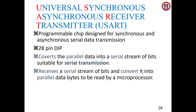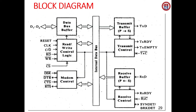This is the block diagram for the USART. It has five sections: the data bus buffer, read/write control logic, modem control — where modem means modulator and demodulator — then the transmitter section and the receiver section. All five sections are connected by an internal data bus.